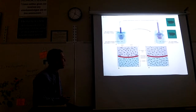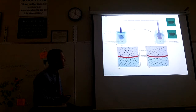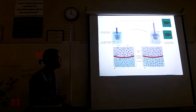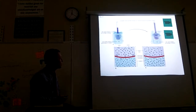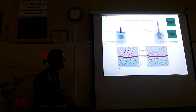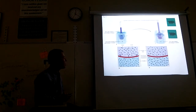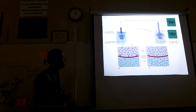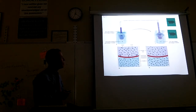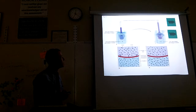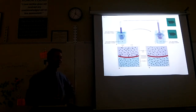Water is going to go from high concentration in the beaker to low concentration in the thistle tube, because the beaker is 95% water and the thistle tube is 90% water. Water will go down its concentration gradient into the thistle tube through the membrane, and you'll see the level of water rise in the thistle tube — it would actually come spilling out the top if you let it continue.